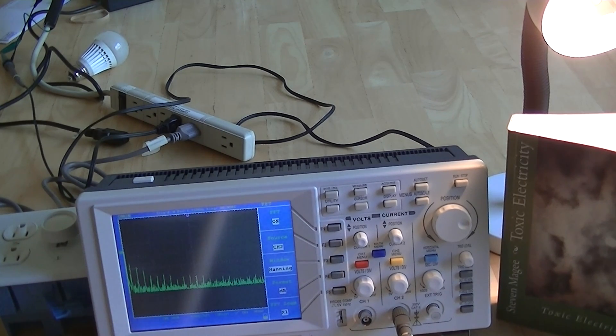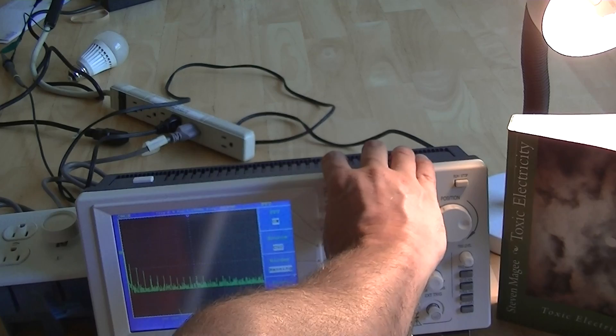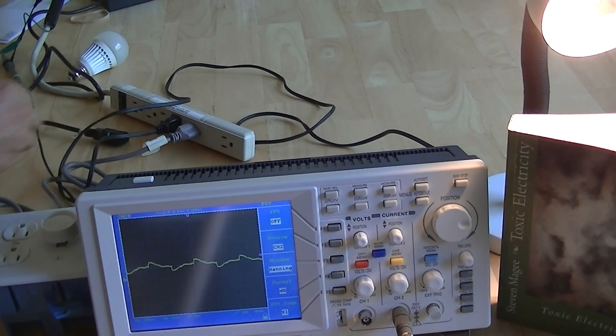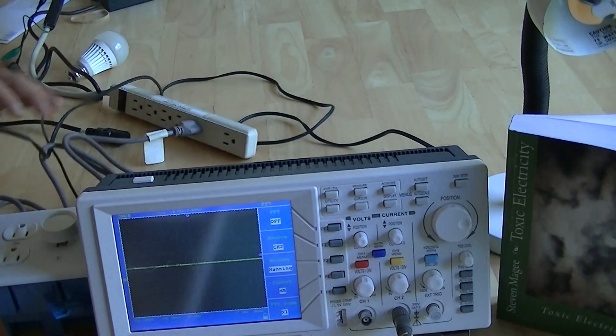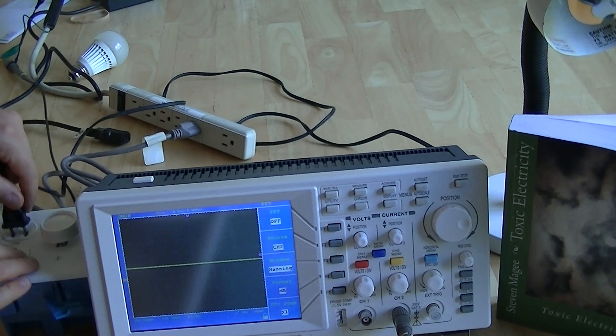So what I want to do now is I want to put the lamp dimmer on. So we're going to have to change outlets. So this is our dimming outlet.